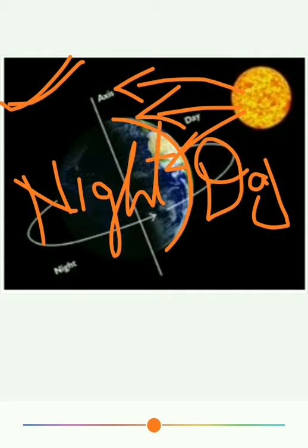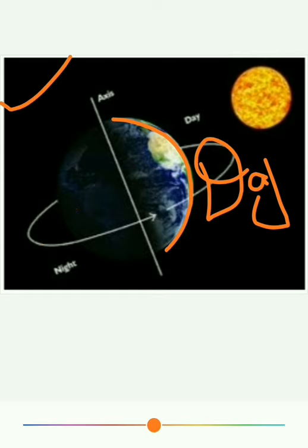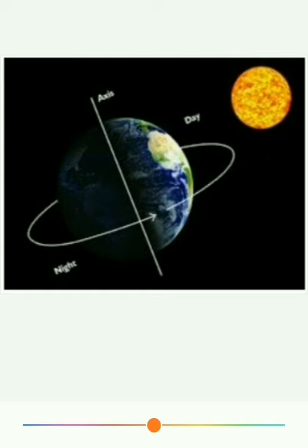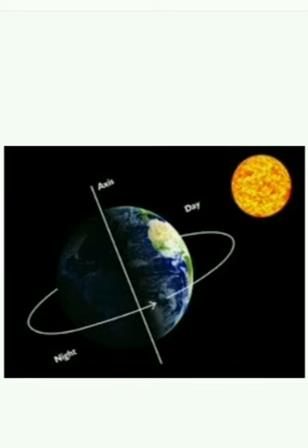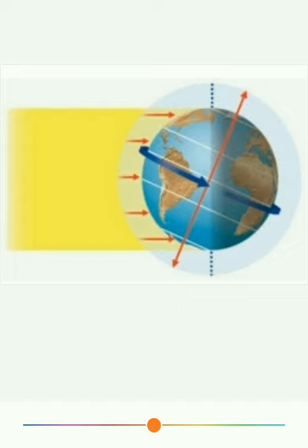From this figure we can easily identify the day and night. Since the Earth rotates from west to east, the Sun appears to rise in the east and set in the west. Observe students — Earth rotation takes place. Can you tell me where the night and day take place?